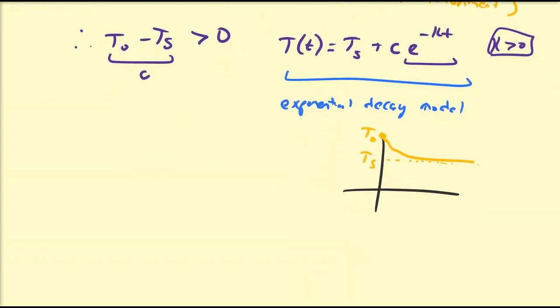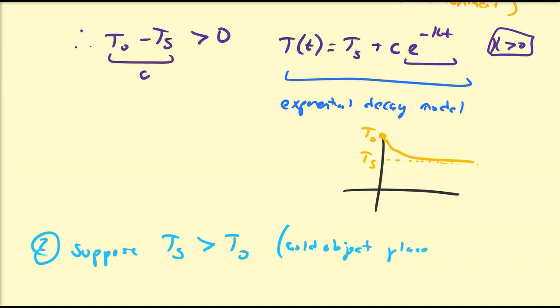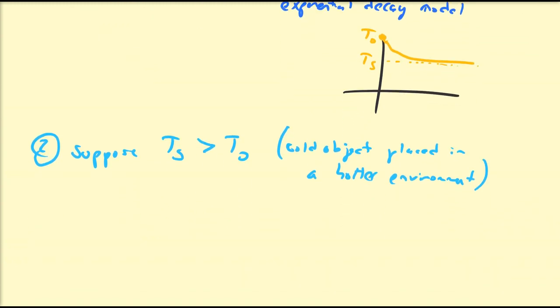Let's look at the other scenario. Let's suppose that Ts is greater than T0 — so our initial temperature is lower than the surrounding temperature. It's like a cold object placed in a hotter environment, for example a cold sandwich into an already hot oven. So the temperature should increase. Let's make sure this model actually satisfies that.